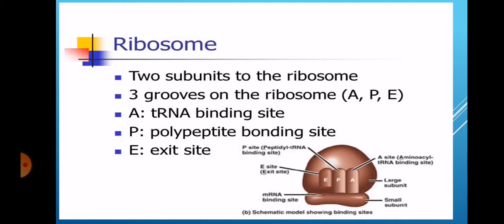Ribosome. You already learned about it. It's a small organelle which is found in cytoplasm or attached with endoplasmic reticulum. Ribosome has two subunits: one is large and one is small subunit. Three sites on the ribosome are A, P and E. A is the tRNA binding site, P is the polypeptide bonding site, and E is the exit site.